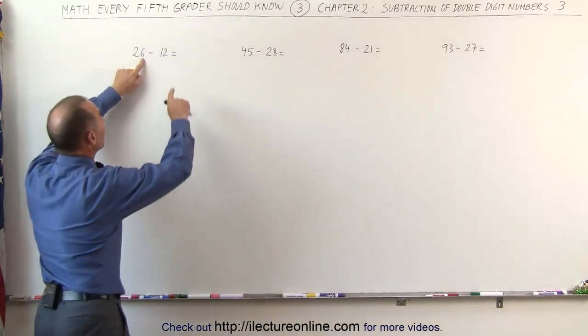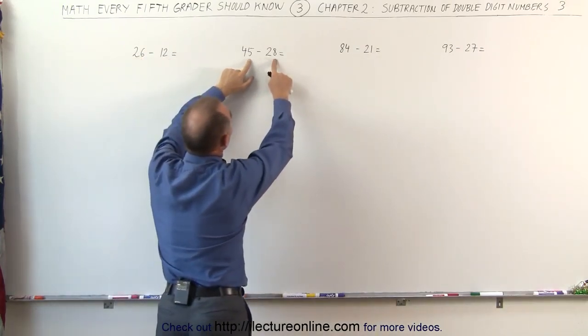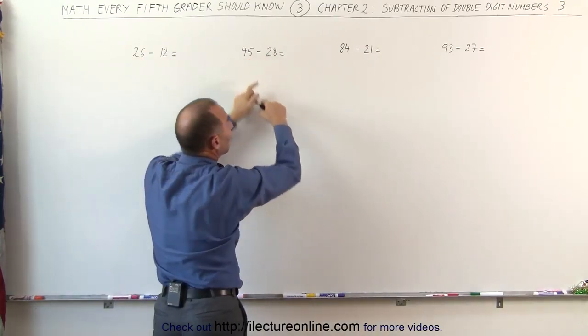Always look at the last two numbers and notice if this number is smaller than that, then you do it one way. But if you look at these two numbers, notice that this number is bigger than this and you do it a different way.